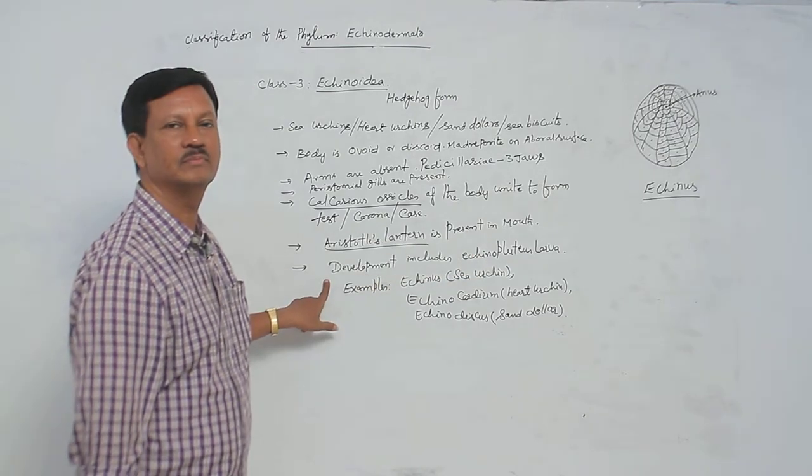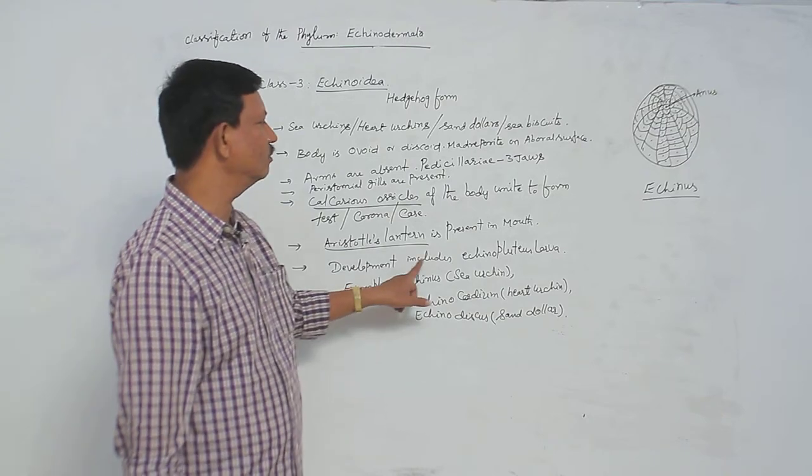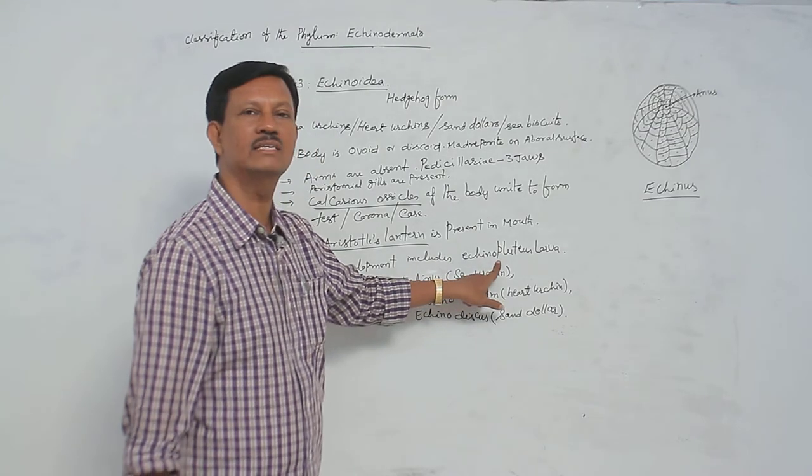Development is also indirect. Development includes the Echinopluteus larvae.